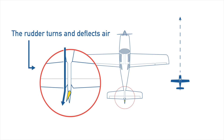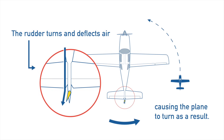The pilot operates controls that cause the rudder to deflect air. In this example, the rudder has been set to stick out of the left side of the tail. As air passes by the plane, it hits the rudder and gets deflected to the left. That pushes the tail to the right, but as the tail is pushed to the right, the plane rotates around its center of lift. If the tail goes right, the nose goes left. So to turn the plane left, air must be deflected off the left side of the rudder. To turn the plane right, air must be deflected off the right side of the rudder.